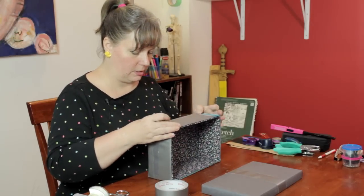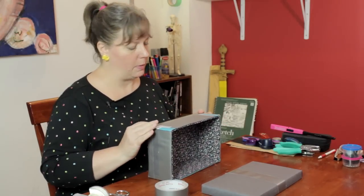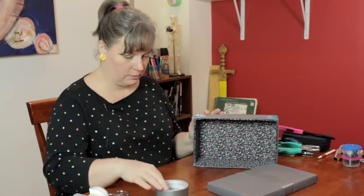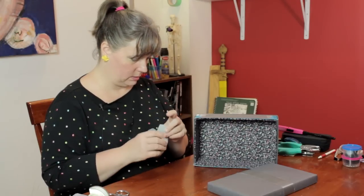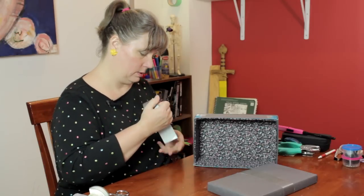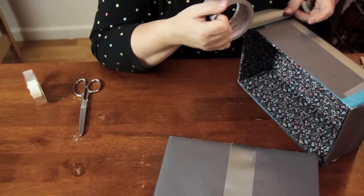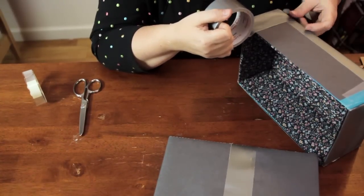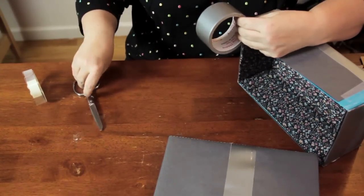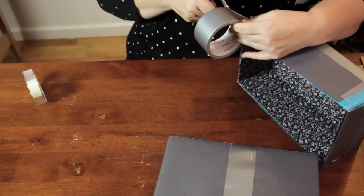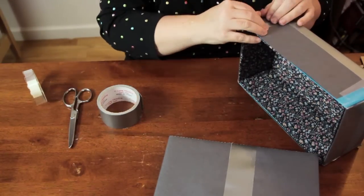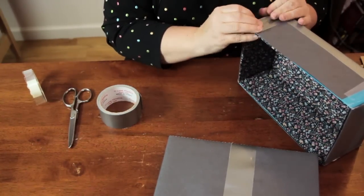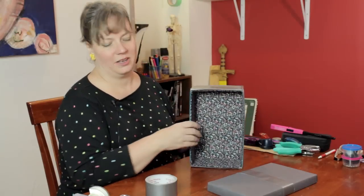I'm just going to fold it up here to get that bottom border. I'm going to go ahead and put it this way. Again trimming it with the scissors. And bending it down. Same thing on the side.